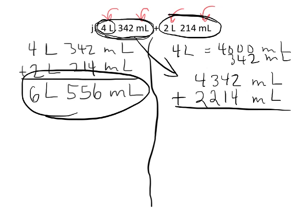So right here we've got 2 plus 4, that gives us 6. 4 plus 1 is 5, 3 plus 2 is 5, 4 plus 2 is 6. So we end up with 6,556 milliliters.